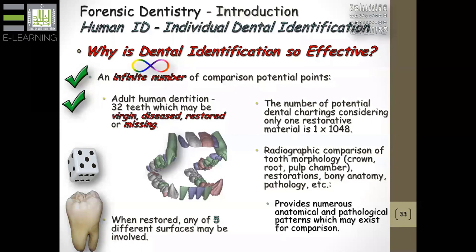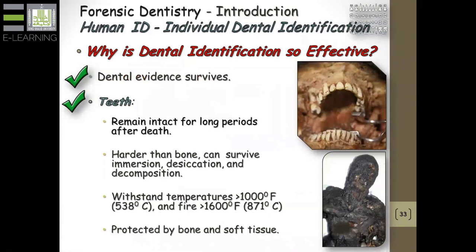If you add the radiographic comparisons — the anatomical trabecular patterns, the internal architectures of the pulp chambers and pulp horns — you have numerous ways to identify and compare ante-mortem and post-mortem information. The teeth remain intact for a long period of time. Harder than bone — bone is 50% organic and 50% calcified, but dentin is at least 70% calcified and enamel 90%. So teeth can withstand tremendously high temperatures and are often protected by the soft tissues, which may expand the air, which acts as an insulator in the sinuses.